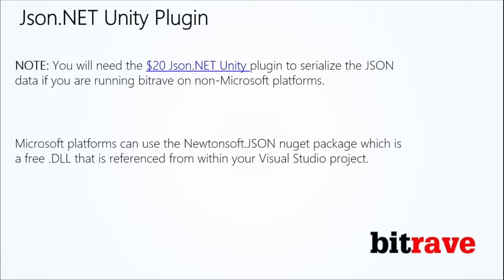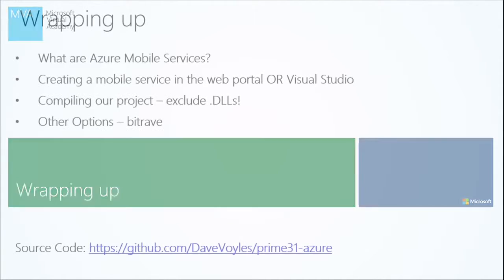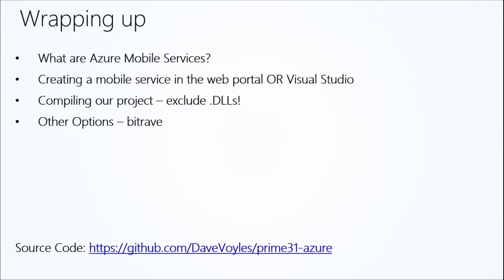Like I said before, the JSON.NET plugin is $20. You can get it from the Unity store itself and build it into your project. So what are Azure Mobile Services? Some great examples of how you could use them: leaderboards, user storage, user data storage on there.